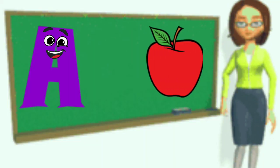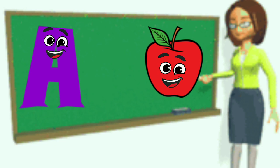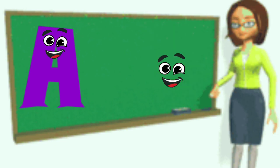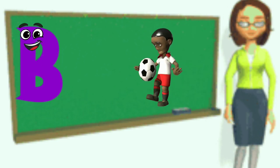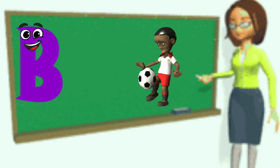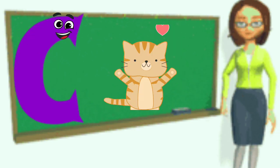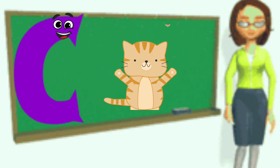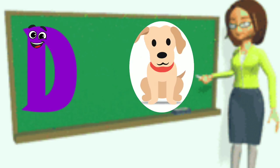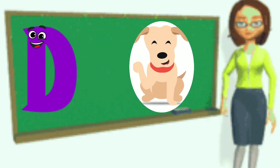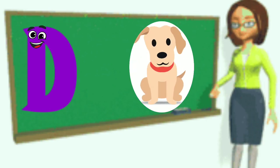A is for Apple, A-A-Apple. B is for Ball, B-B-Ball. C is for Cat, C-C-Cat. D is for Doll, D-D-Doll.